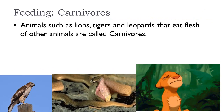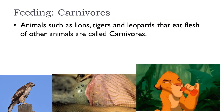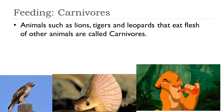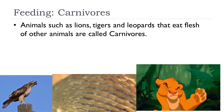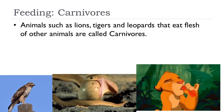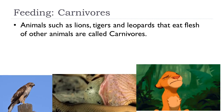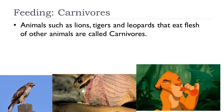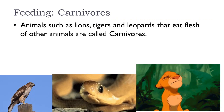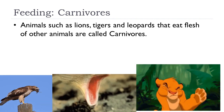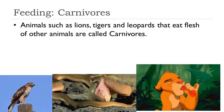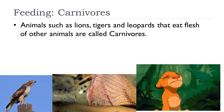Animals that eat the flesh of other animals are called carnivores. They have sharp pointed canine teeth to tear the flesh. Their back teeth are strong with sharp edges to tear flesh and bones. Examples include lions, tigers, and leopards. Birds of prey such as eagles and vultures have sharp hooked beaks for tearing the flesh of their prey. Snakes are also carnivores; however, they do not have canine teeth. They poison their prey and then swallow it completely.